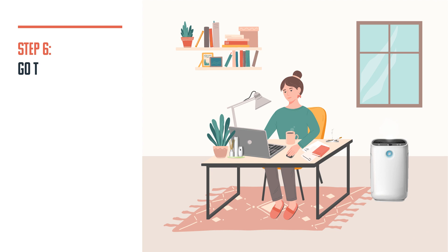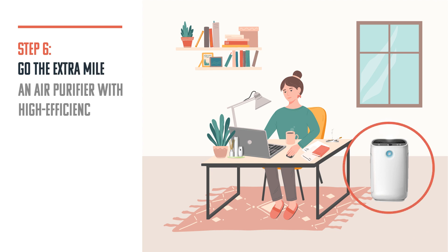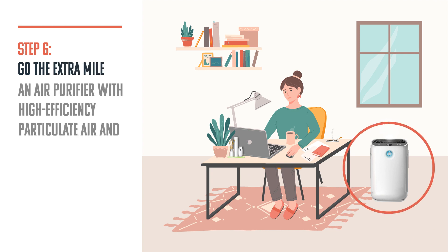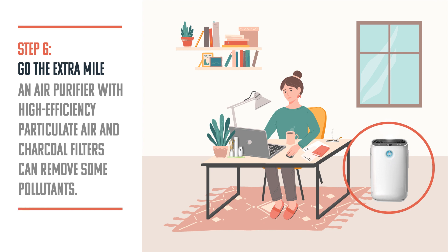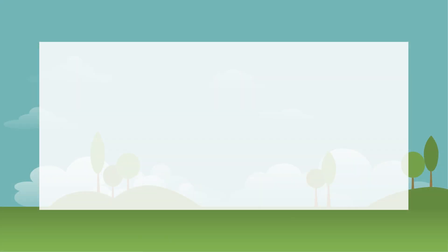Step six: go the extra mile. An air purifier with high-efficiency particulate air (HEPA) and charcoal filters can remove some pollutants. You should keep the purifier running while the room is occupied, even overnight, and remember to bring in clean outside air whenever possible. Check and change or clean filters as needed or recommended.